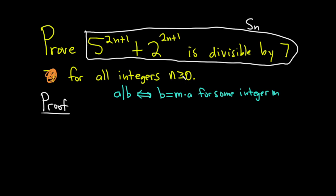That's actually what induction does — it allows you to prove a statement about integers, namely about positive integers, but we can start at 0. Now in induction proofs, the first step is called the base case.